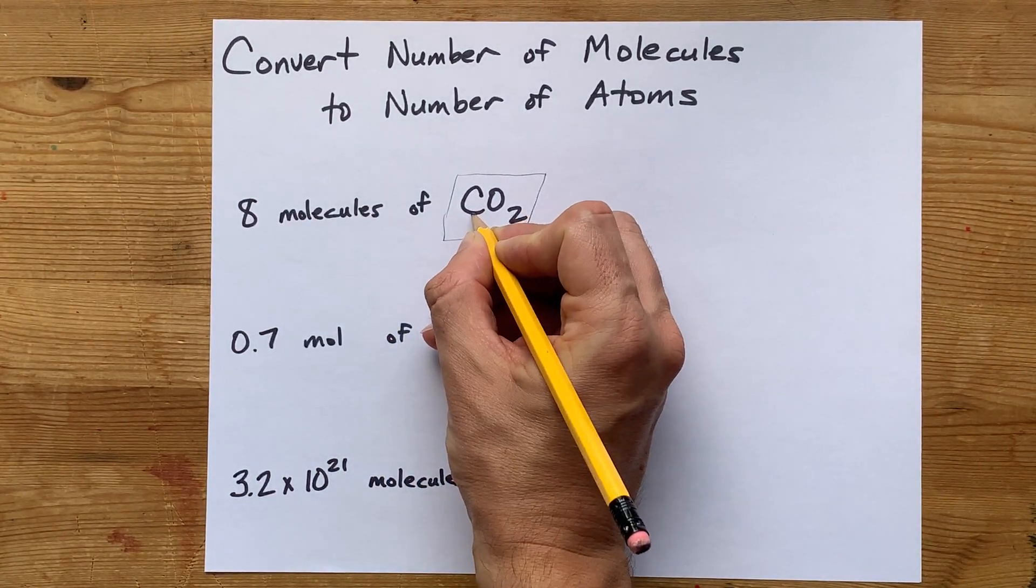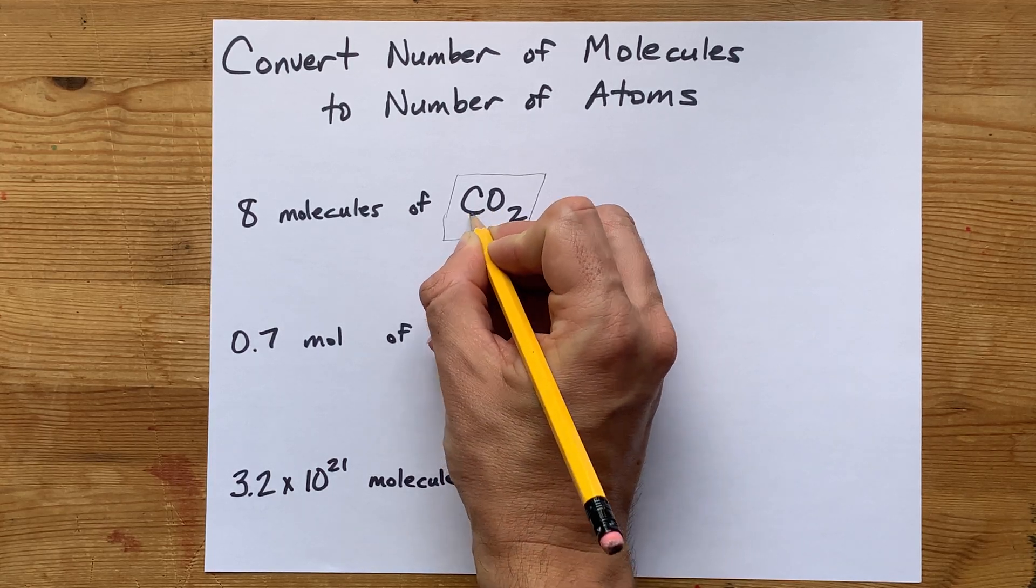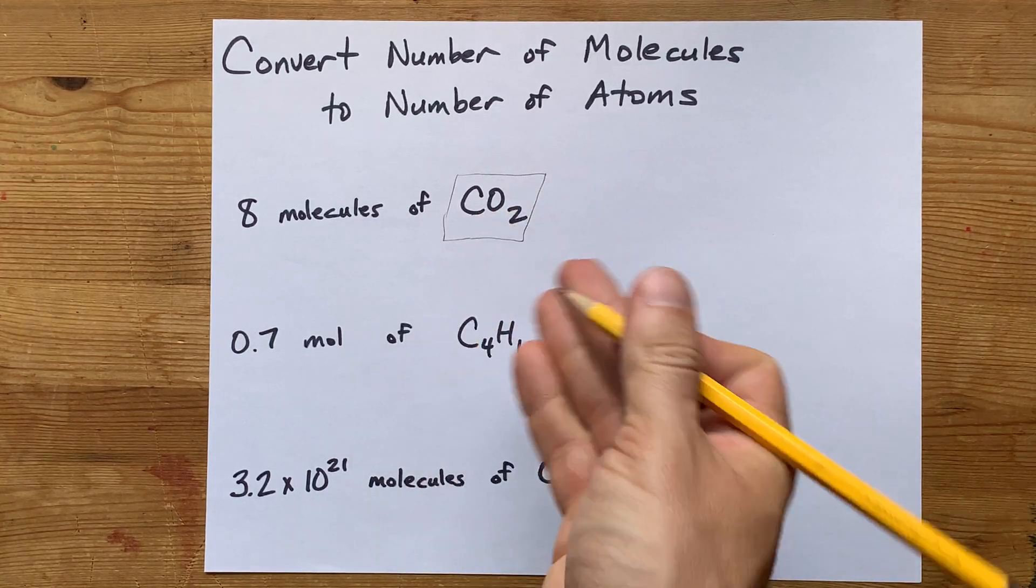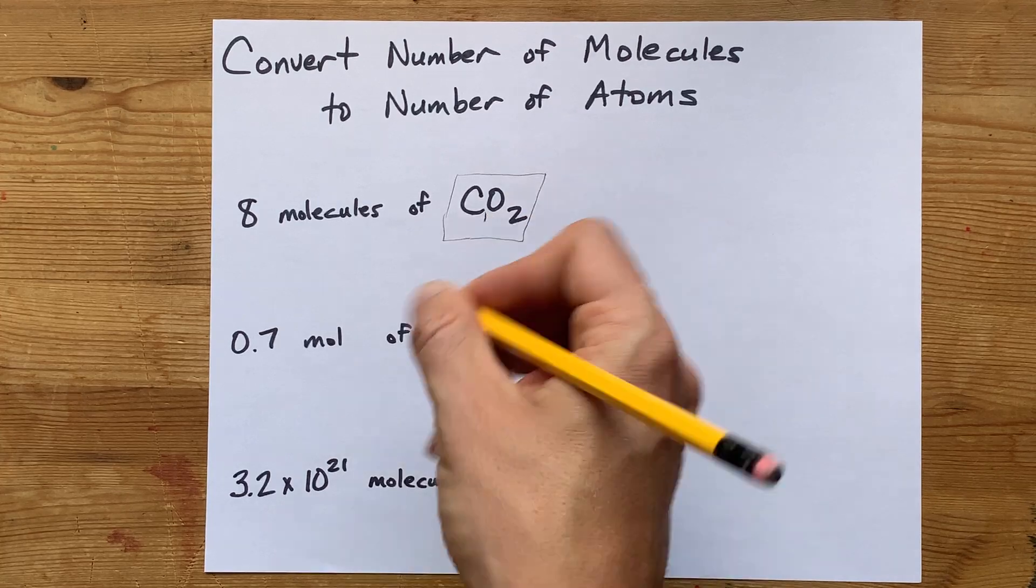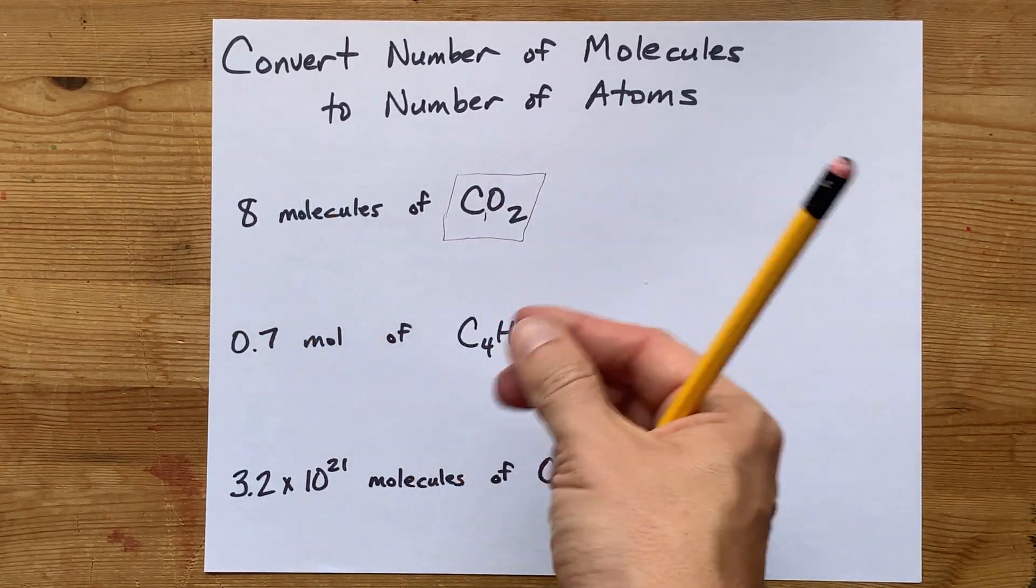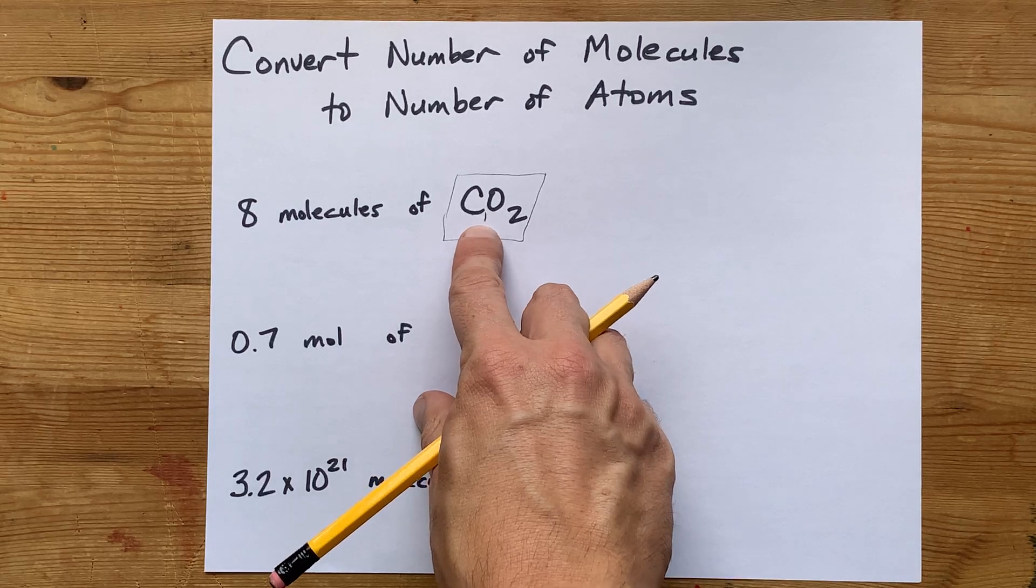This is a capital C and that's a capital O, so these are two separate elements. This capital C is just carbon. There's no subscript on it, which means there's an implied subscript of one. There's only one carbon here. If there was more than one, we would have put a little number there.